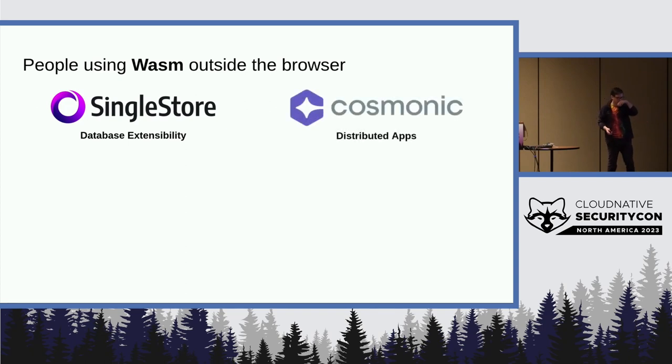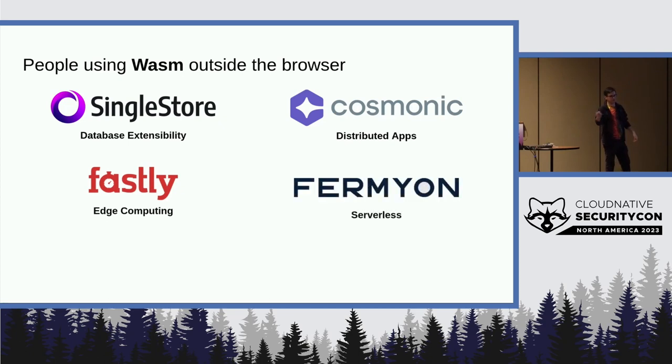Companies like Cosmonic are using it to create distributed application systems. Fastly is using it for edge computing. Fermyon is using it for service runtimes and platforms.